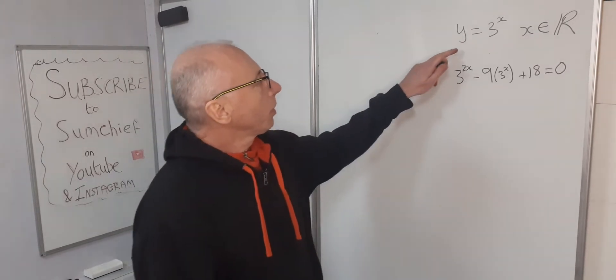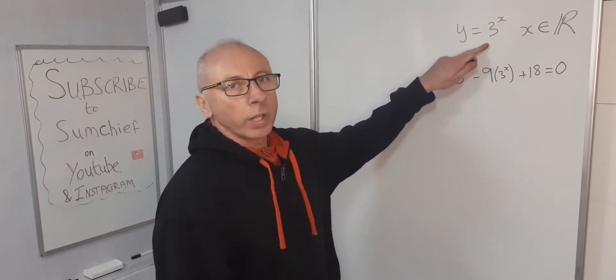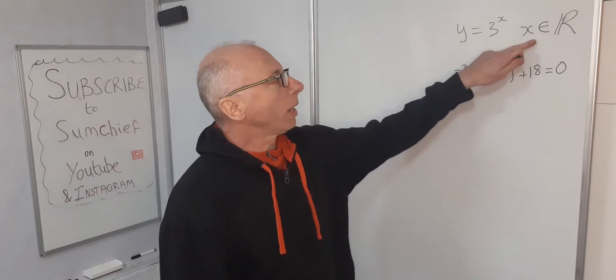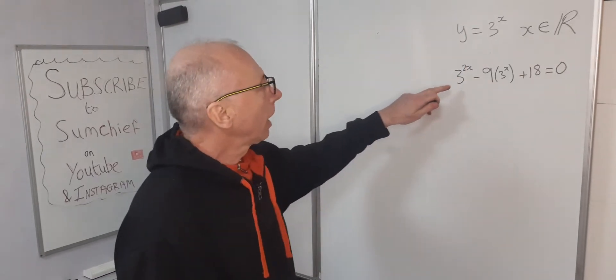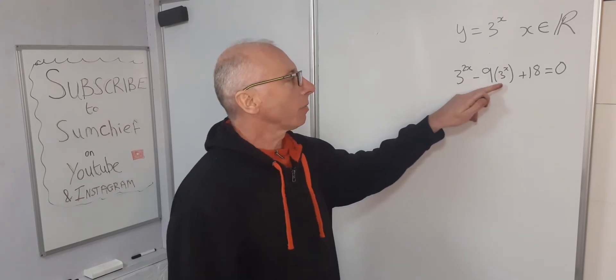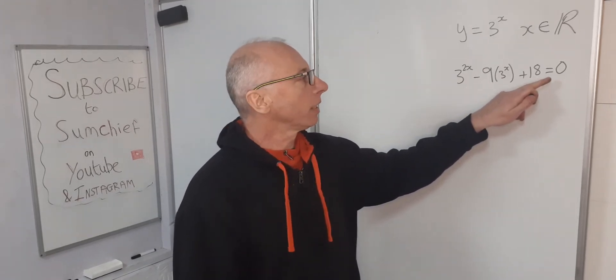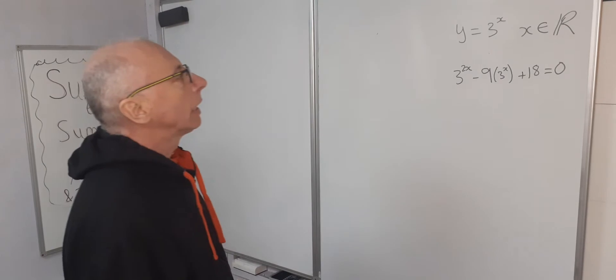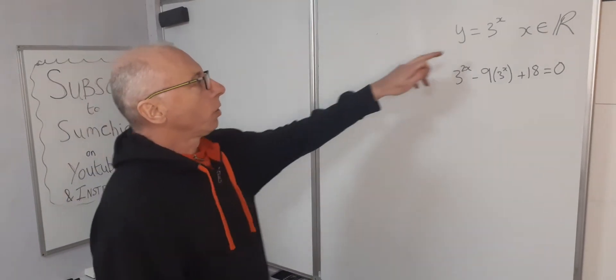Okay, so we've got y equals 3 to the power of x, where x is a real number, and we've got 3 to the power of 2x minus 9 times 3 to the x plus 18 equals 0. So what we want to do here, first of all, we'll graph y equals 3 to the x.